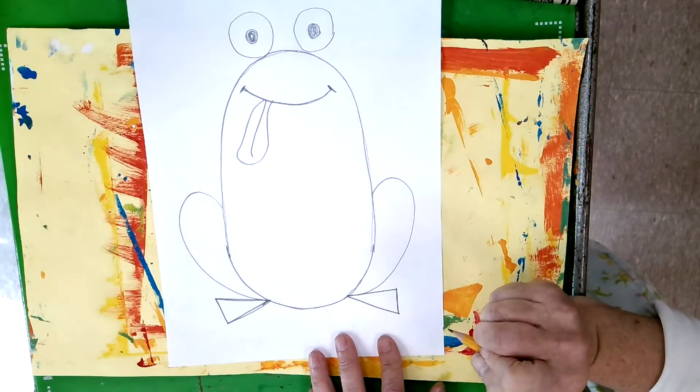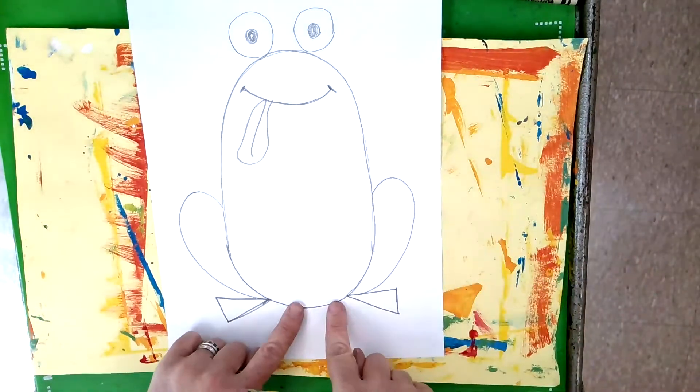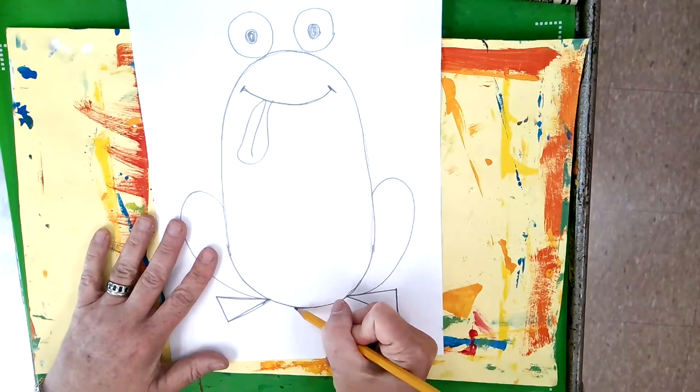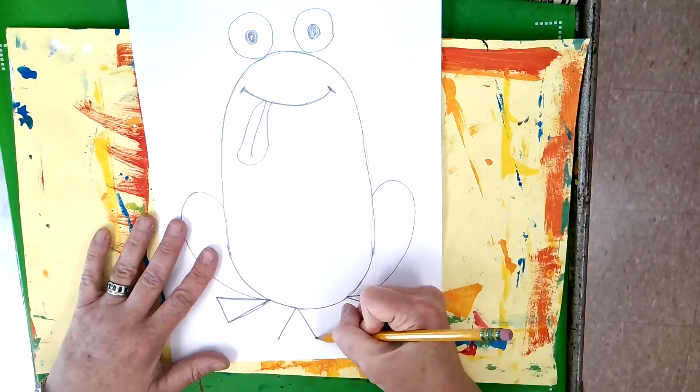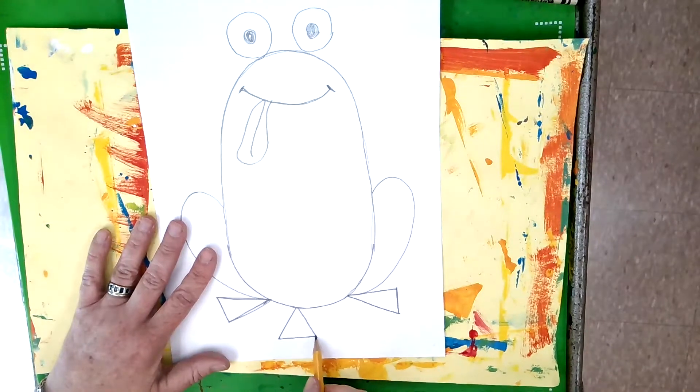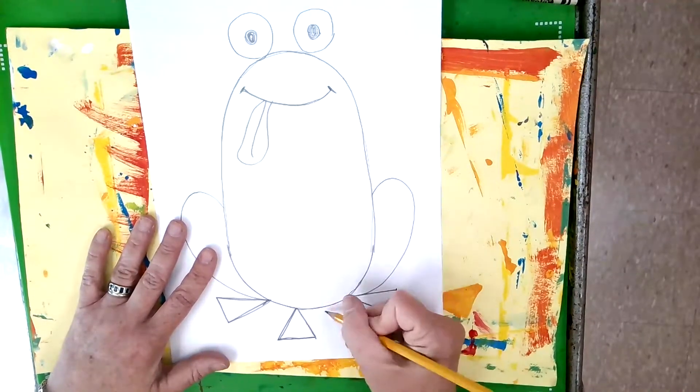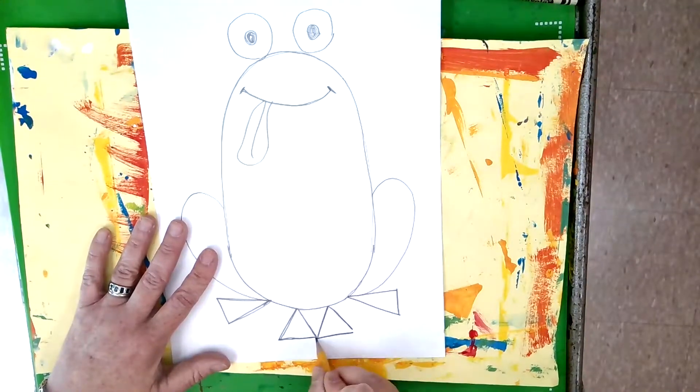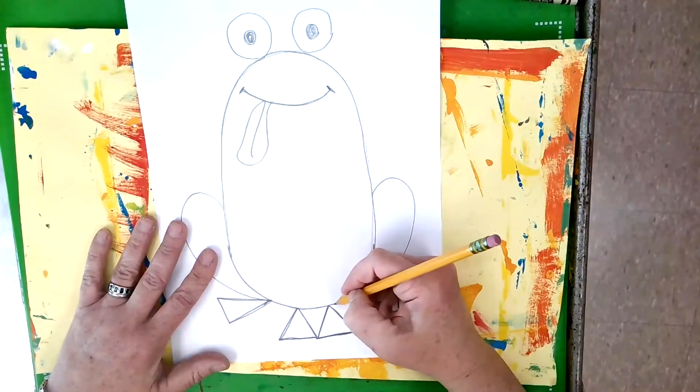Then we have to do the front feet, and I'm going to do an upside down letter V or an A without this line in it. Close that up so it's just about a triangle there, and then one here, close it up. Then we have to do the legs, those are the front legs.